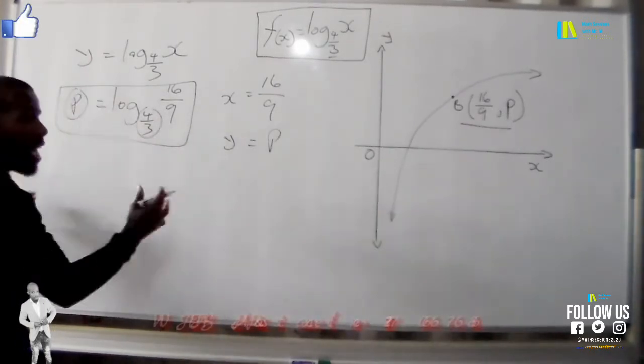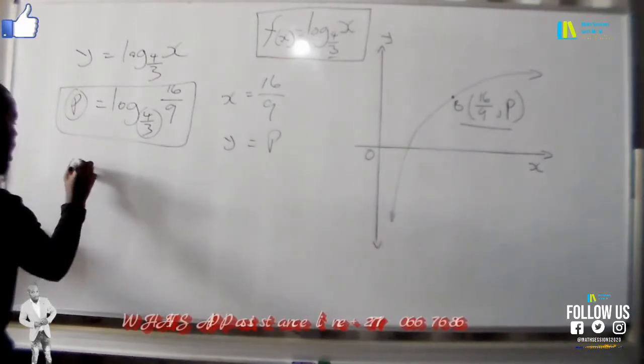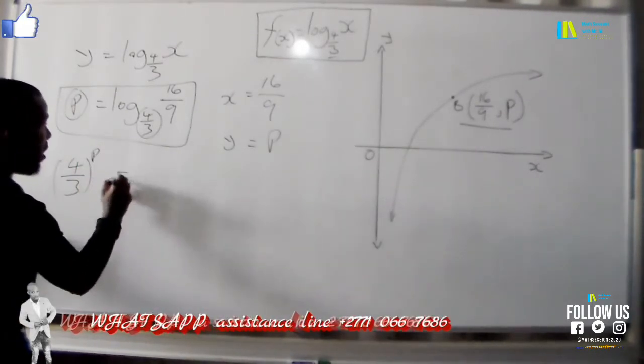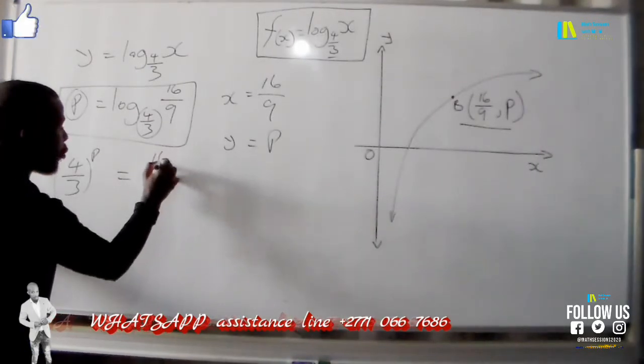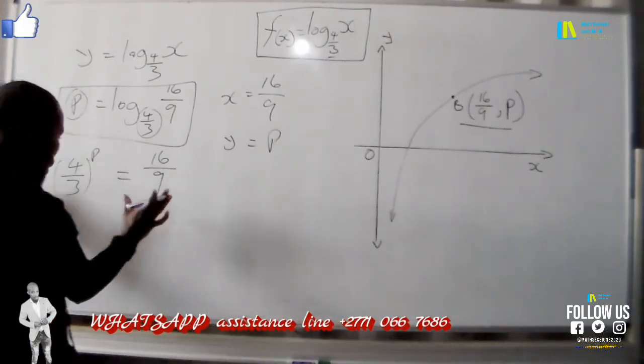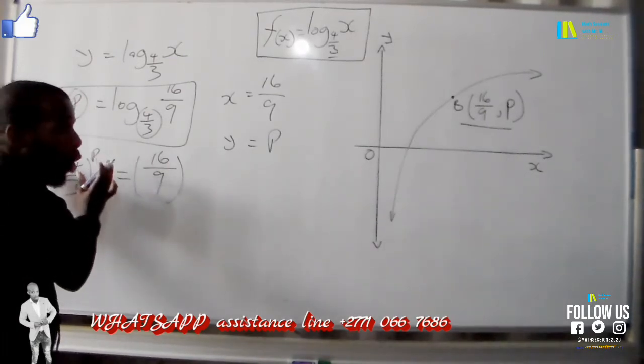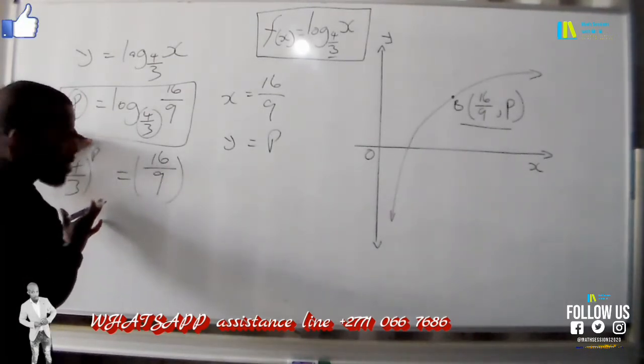We take this base and we raise it to the other side of the equal sign and make p the exponent. We say 4/3 raised to the exponent of p is equal to on the other side we are left with 16/9.